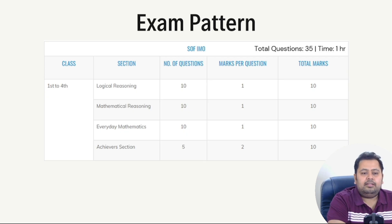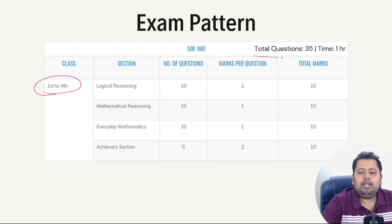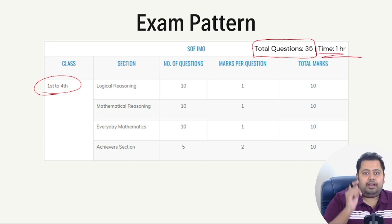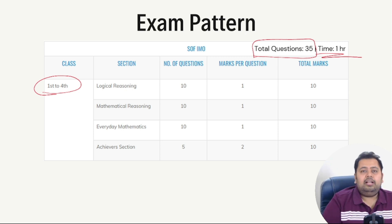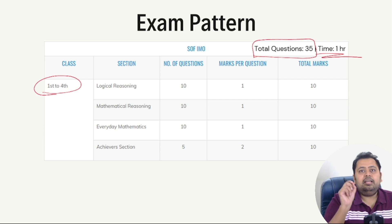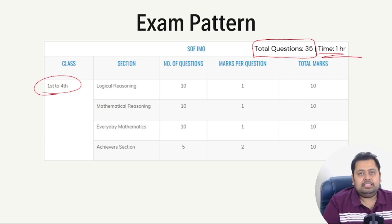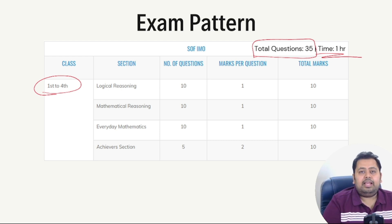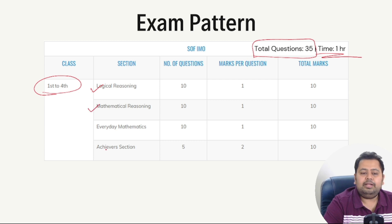Now let's go to the examination pattern. For Class 1 to 4, the total number of questions is 35 and the time is one hour. It's very important for your child to practice these examinations in a time-bound manner at home before the final examination. There are four sections: Logical Reasoning, Mathematical Reasoning, Everyday Mathematics, and Achiever Section.